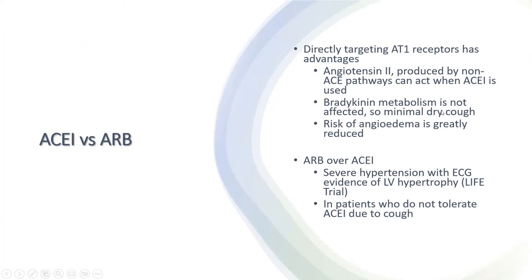ACE inhibitors are considered first-line for heart failure, asymptomatic LV dysfunction, post-STEMI/NSTEMI, diabetes with systolic dysfunction, and CKD. Regarding ACE inhibitors versus ARBs: there is no compelling evidence to choose one over the other, but ARBs have advantages — reduced dry cough due to bradykinin metabolism, ability to inhibit angiotensin 2 produced by non-ACE pathways, and greatly reduced risk of angioedema. The specific indication where ARBs are preferred over ACE inhibitors is severe hypertension with ECG evidence of left ventricular hypertrophy, as shown in the LIFE trial.